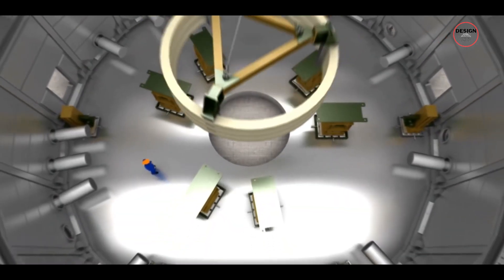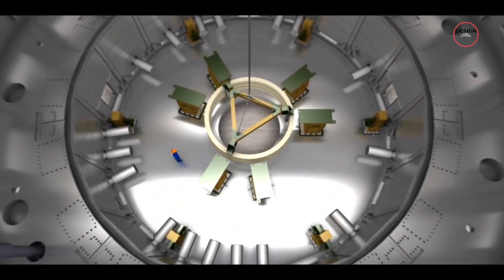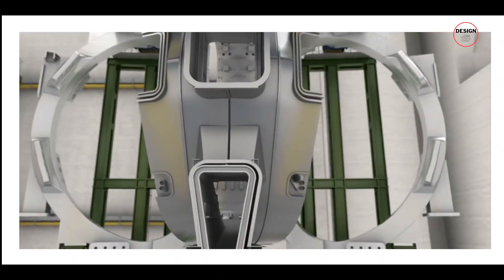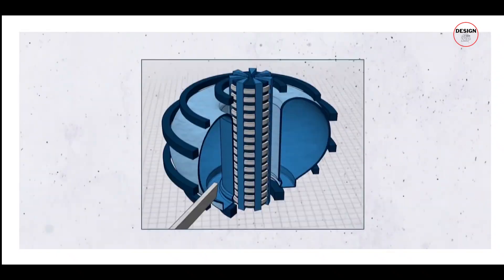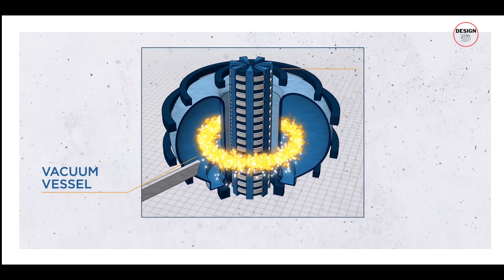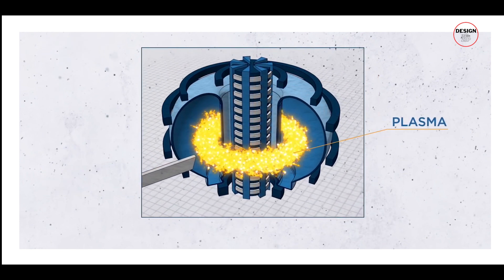However, ITER has a plan to address this challenge. The reactor will be testing a tritium breeding blanket technology. This means tritium will be produced within the reactor itself, potentially making future fusion reactors self-sufficient in terms of fuel supply.